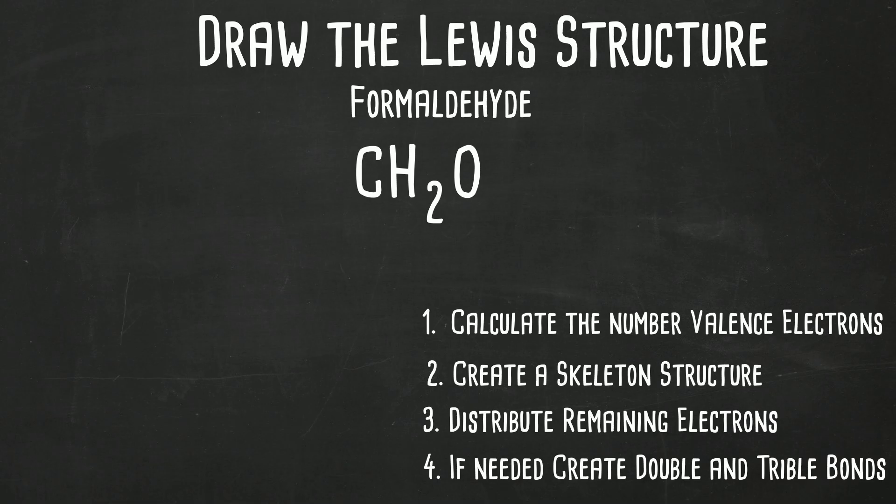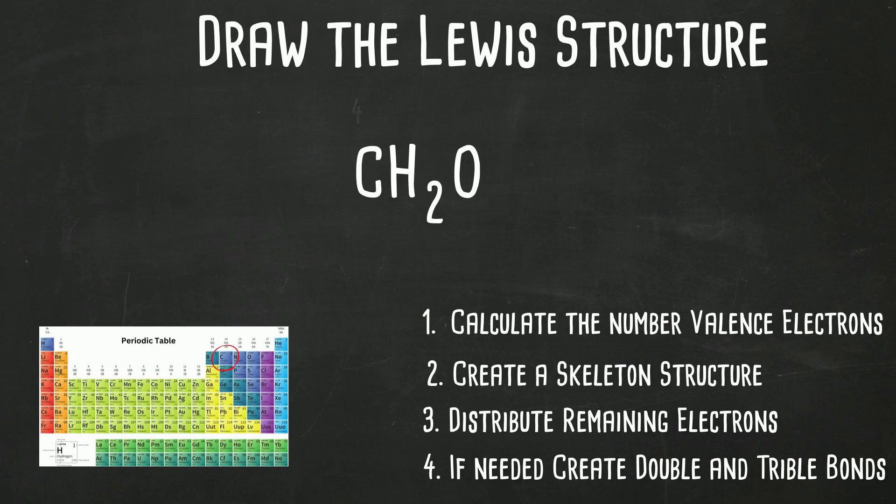So let's get started by counting the valence electrons. Carbon is in group 14, so carbon will have four valence electrons. Hydrogen is in group 1, but there's two hydrogens, so you'll multiply 1 times 2. And then oxygen is in group 16, so we'll have six valence electrons, so that's 12 total.